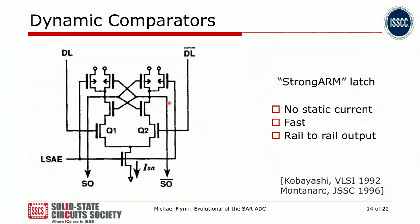Most SAR ADCs now use some sort of dynamic comparator. I show here a picture of an early dynamic comparator. The key thing about a dynamic comparator is it's comprised of two essentially cross-coupled inverters, shown here in this part. Dynamic comparators have some important advantages: they consume no static current, they're very fast, and they provide a rail-to-rail output. This type of comparator is often known as the strong arm latch. However, it was originally published in a memory paper by Kobayashi in 1992, and later appeared in a paper describing the StrongARM processor in 1996, hence its name.